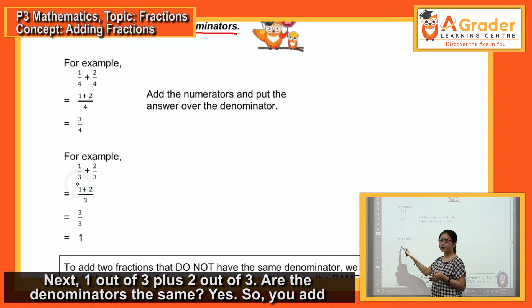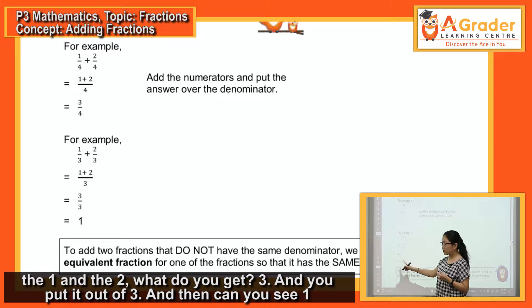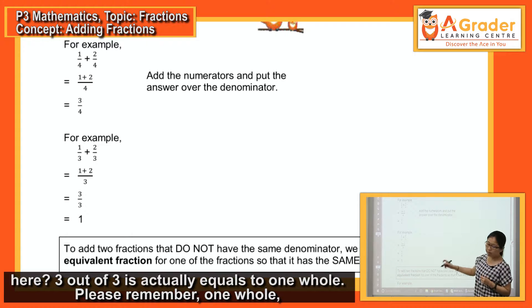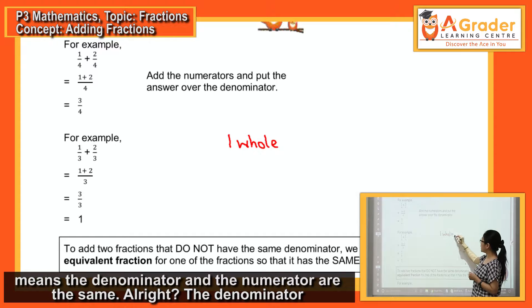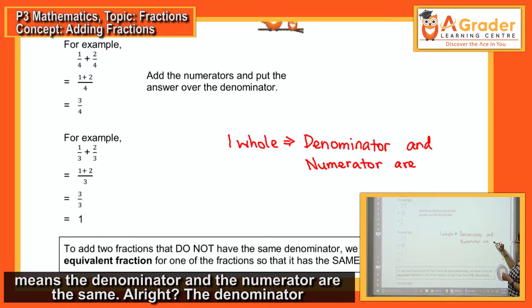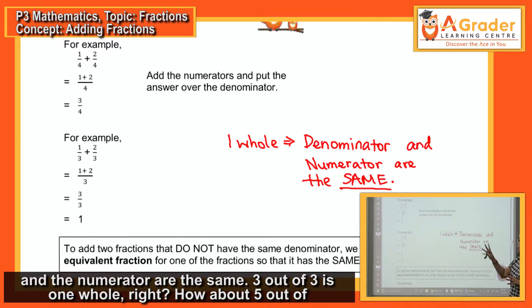Next: one out of three plus two out of three. Are the denominators the same? Yes. So you add one and two, you get three, and you put it out of three. Three out of three is actually equal to one whole. One whole means the denominator and the numerator are the same. So you can see three out of three is one whole.